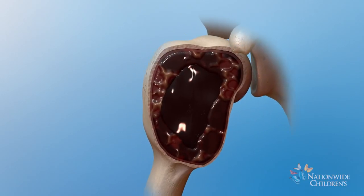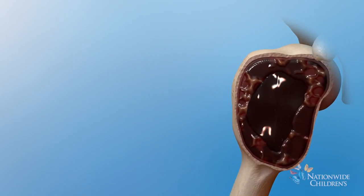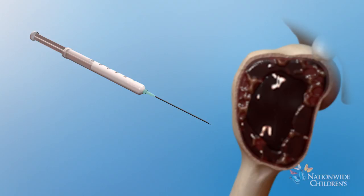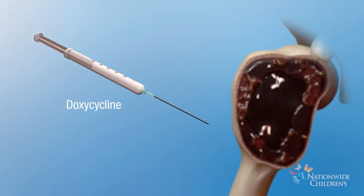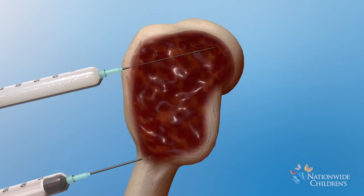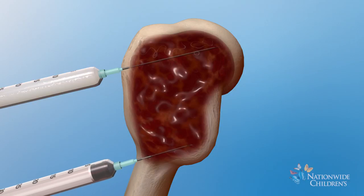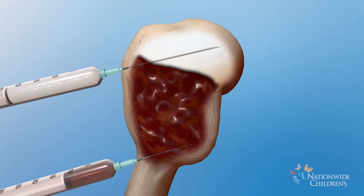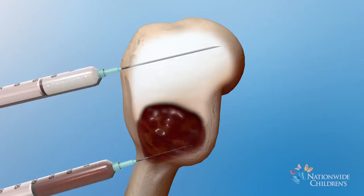A new interventional radiology treatment for aneurysmal bone cysts involves a series of injections of a drug called doxycycline. Imaging is used to guide placement of small needles into the egg-like tumor, then doxycycline is injected to replace the fluid in the tumor.